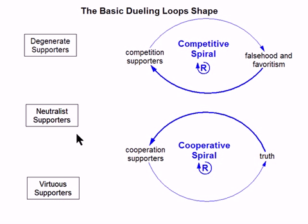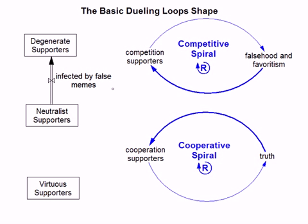In between, of course, are the non-committed neutralist supporters. These are similar to swing voters in elections — they really haven't made up their mind and they're not strongly committed. When a neutralist supporter is influenced by falsehood and favoritism to become a degenerate supporter, they flow from this stock to this one. Let's add a flow pipe with a rate node to show this relationship, and let's do the same for the other two stocks.